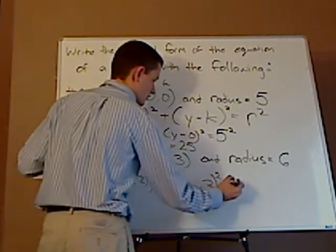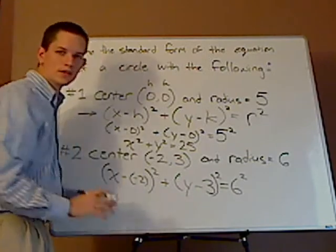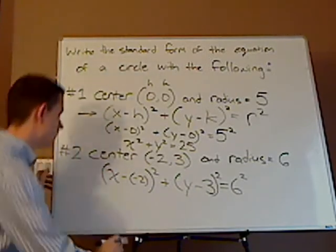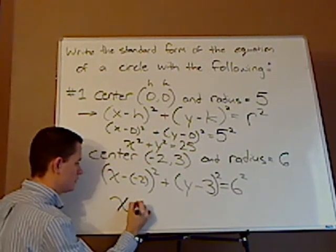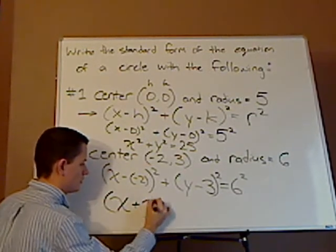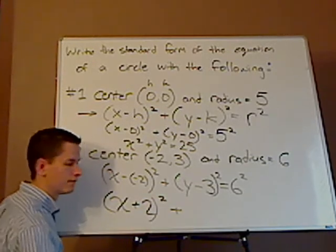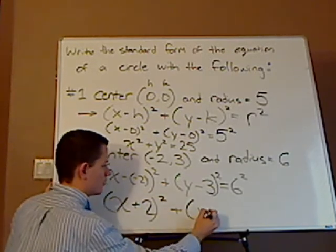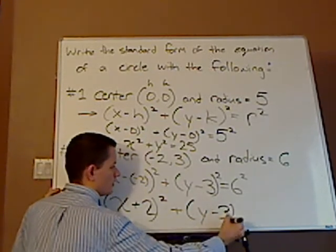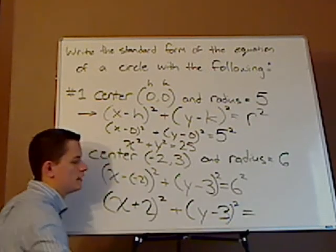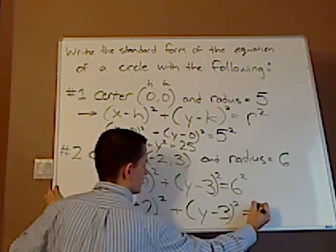And then simplify a little bit. A double negative gives you a plus, so that's going to be (x + 2)² plus (y - 3)². And then, what's 6 squared? Yes, 36.